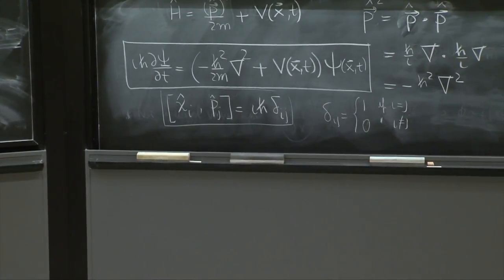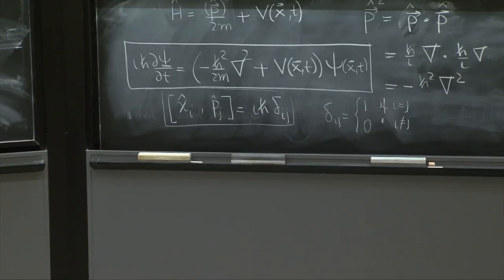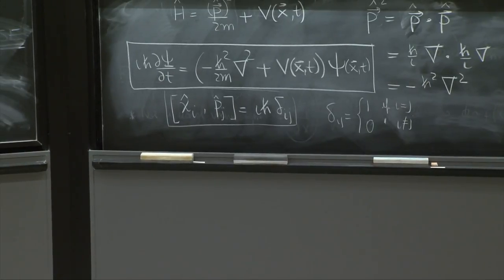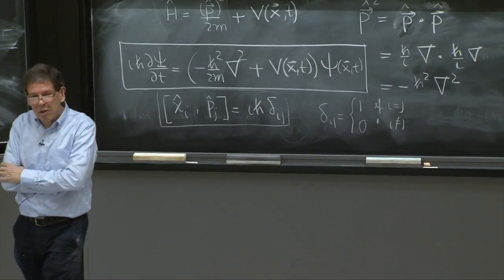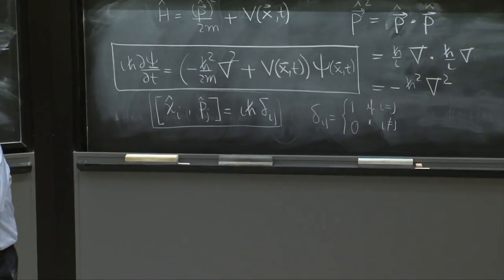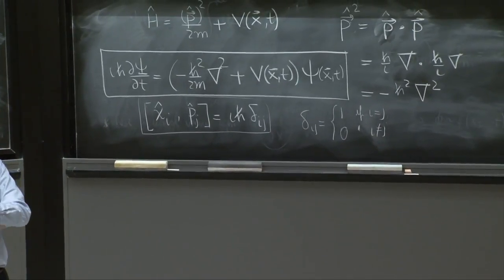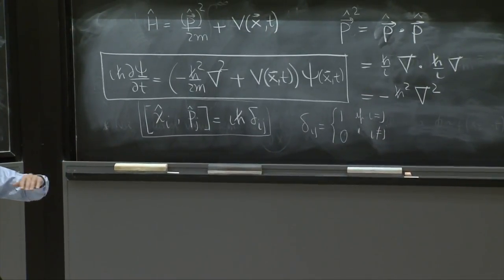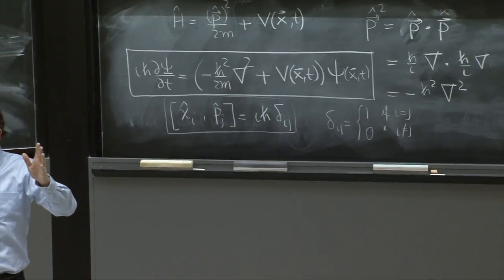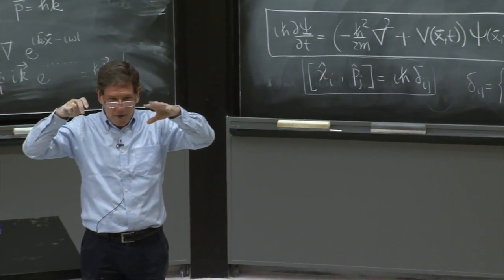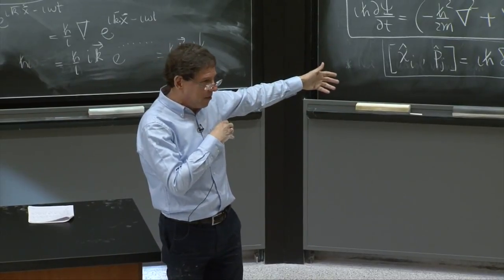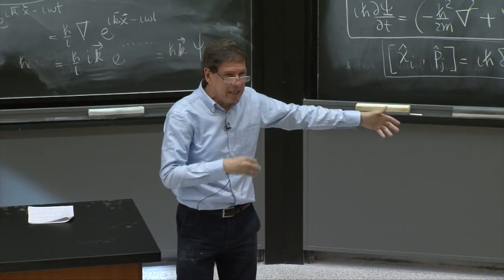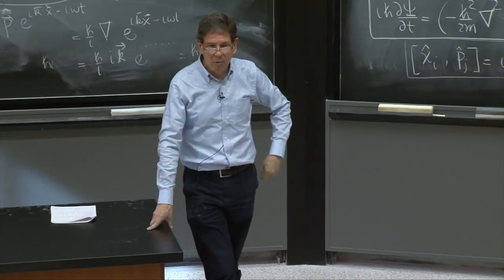So that's it for the Schrodinger equation. Our goal is going to be to understand this equation. So our next step is to try to figure out the interpretation of this psi. We've done very nicely by following these things. We had the Broglie wave. We found an equation. We invented a free Schrodinger equation. We invented an interacting Schrodinger equation. But we still don't know what the wave function means.